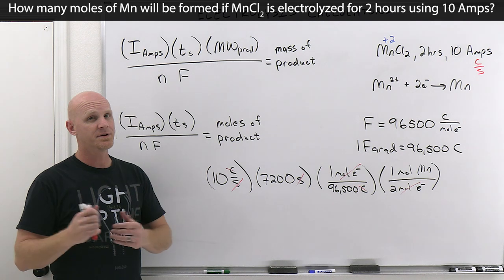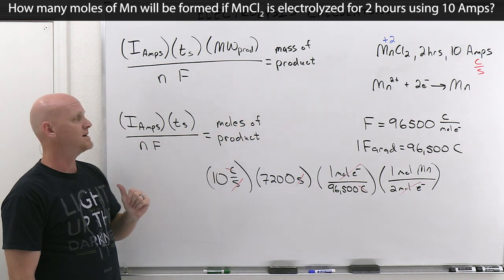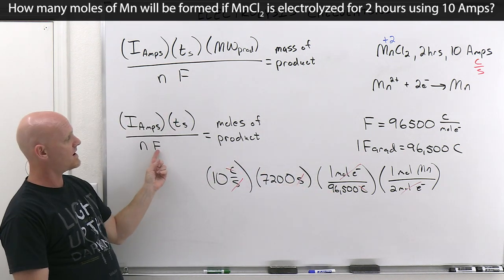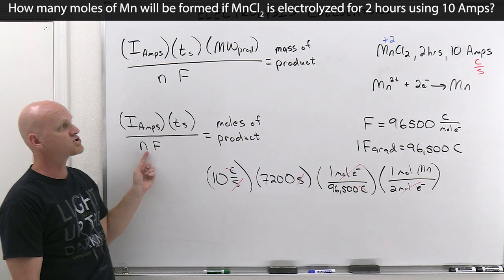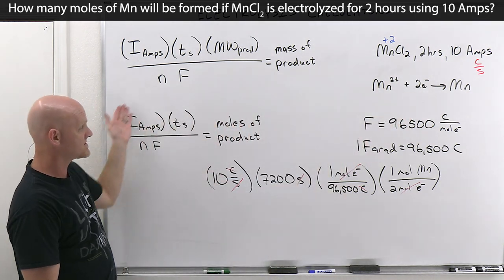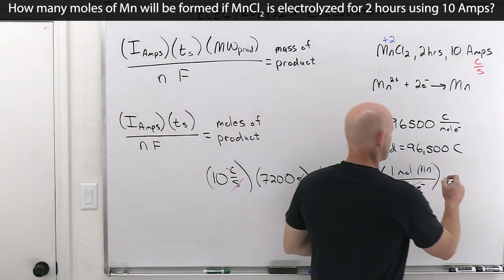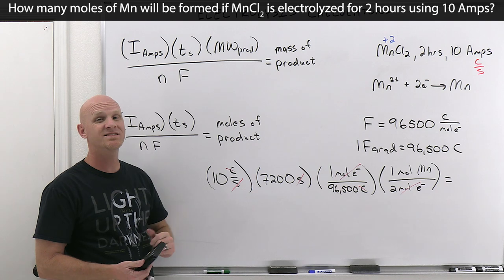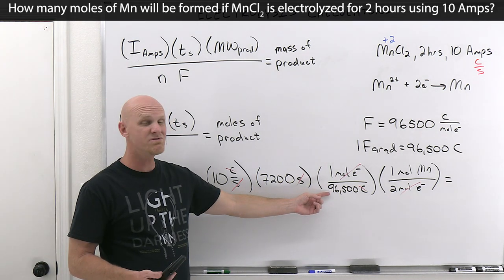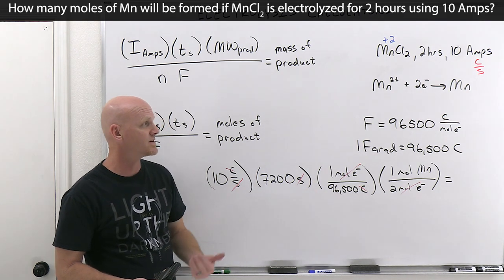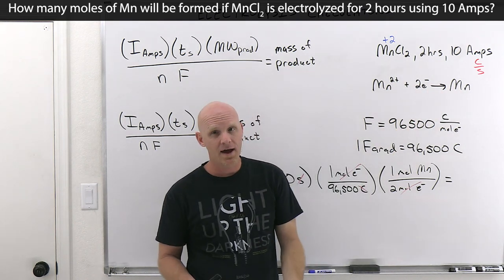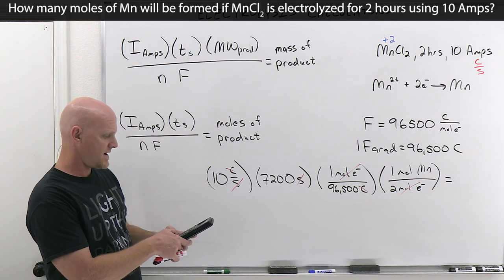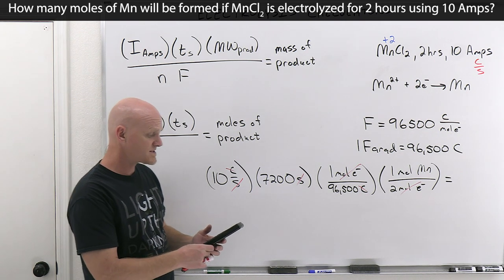That dimensional analysis gives us the second equation for moles of product: current (amps) × time (seconds) ÷ Faraday's constant ÷ moles of electrons transferred in the half reaction. We can approximate: 10 × 7,200 = 72,000, which is about two-thirds of 96,500 — roughly two-thirds of a mole of electrons — producing one-third of a mole of manganese. The exact calculation: 10 × 7,200 ÷ 96,500 ÷ 2 = 0.37 moles of manganese.